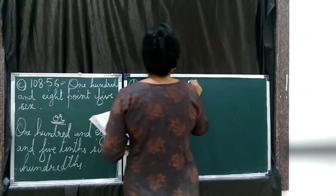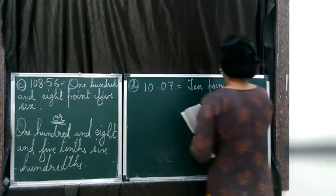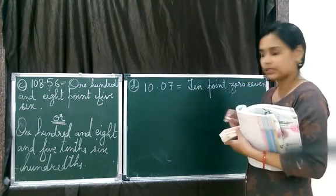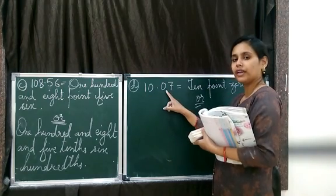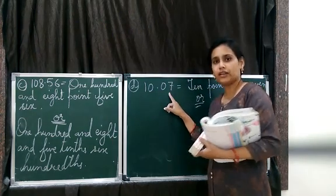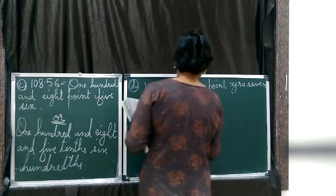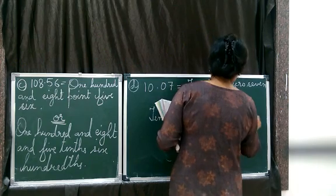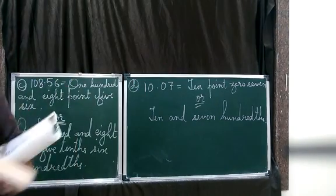Very simple. 10 point 0 7. Or 10 and 0 tenths 7 hundredths. Or only you can say 10 and 7 hundredths.